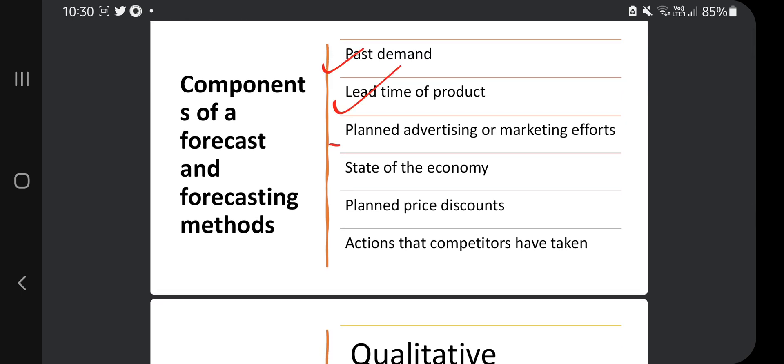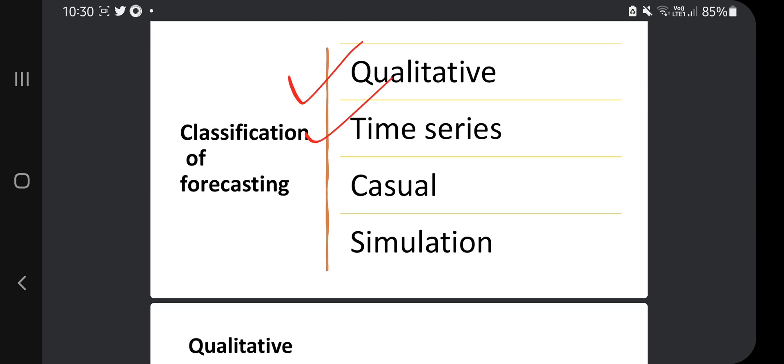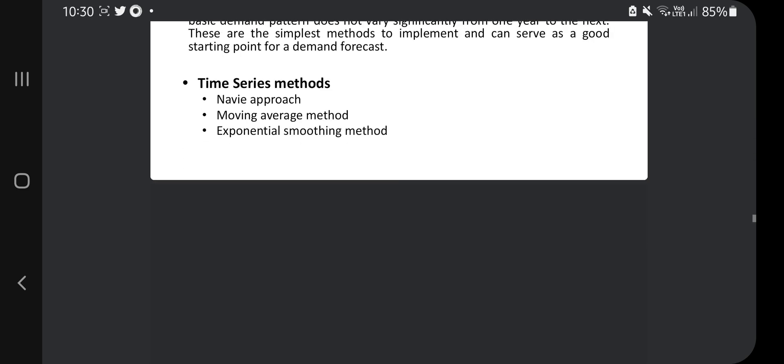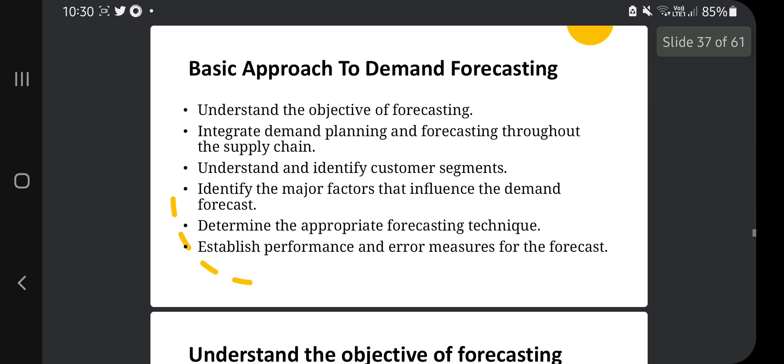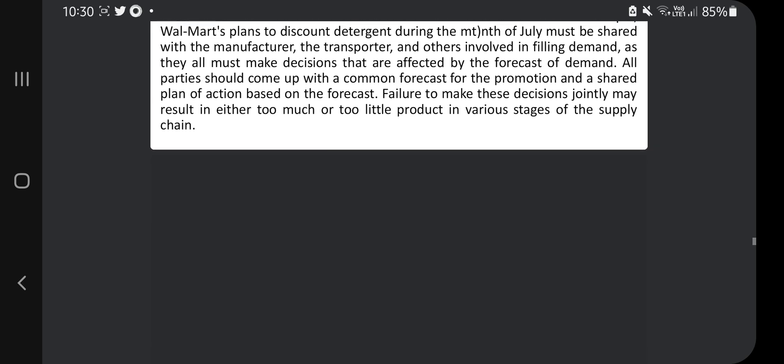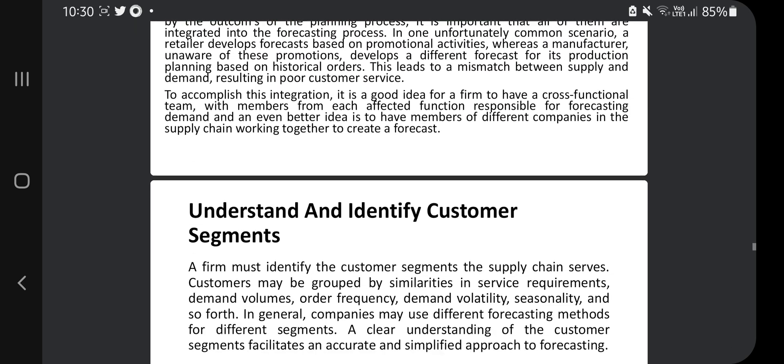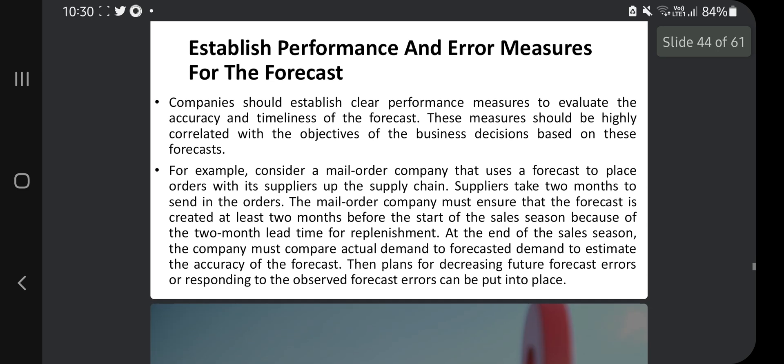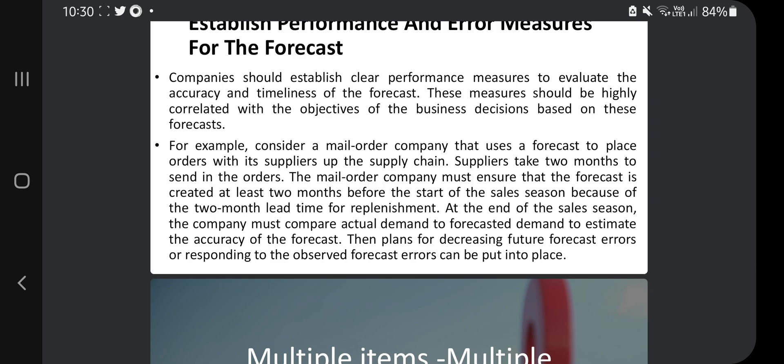And the components of forecasting and forecasting methods - these are the components, so you have to go through these components and get what it means. Classification - four types are there: qualitative, time series, causal, and simulation. So each of these information is given here. Just get to know a few key points regarding each of these. Then you have to move to the basic approach to demand forecasting. So there is a method for forecasting, that is the basic approach. And then the factors and the error measures. So factors are present here, error measures are present here.